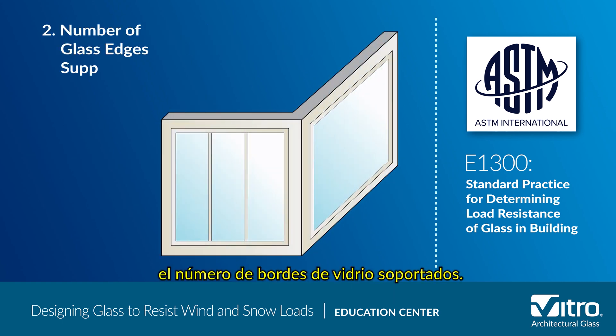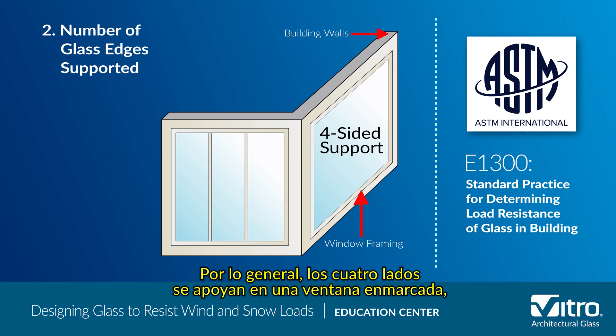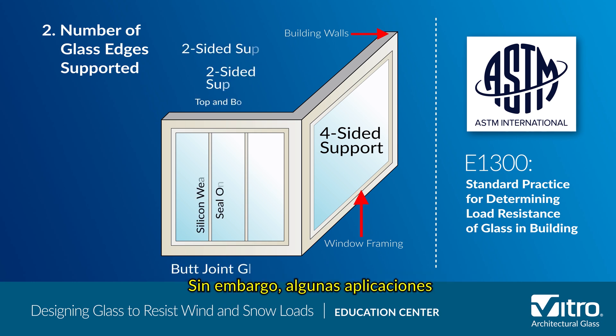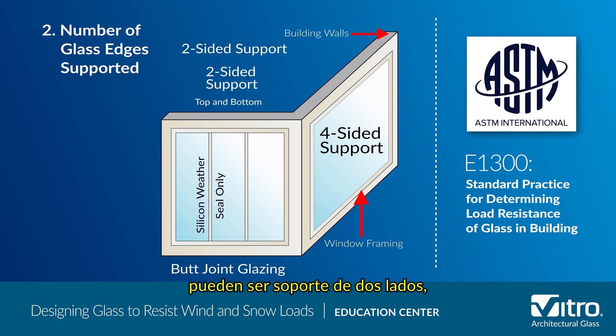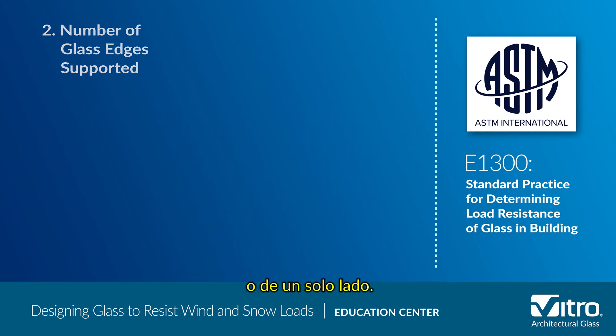Two: the number of glass edges supported. Typically, all four sides are supported in a framed window or a four-sided structural silicone glazing. However, some applications can be two-sided support such as butt joint glazing, or sometimes even three-sided or one-sided supports.